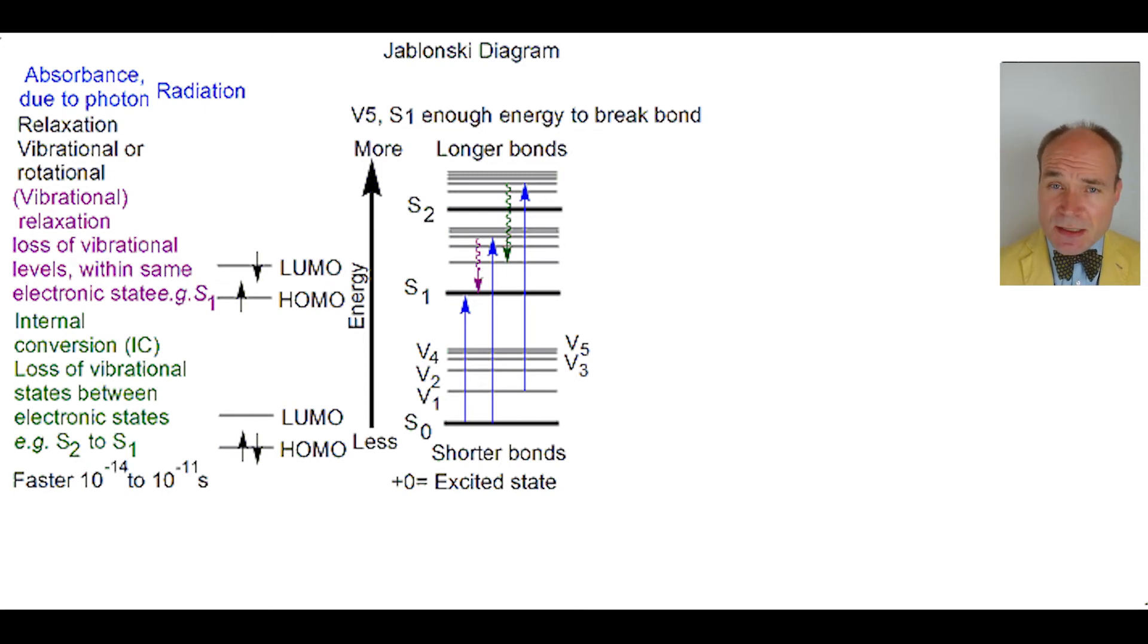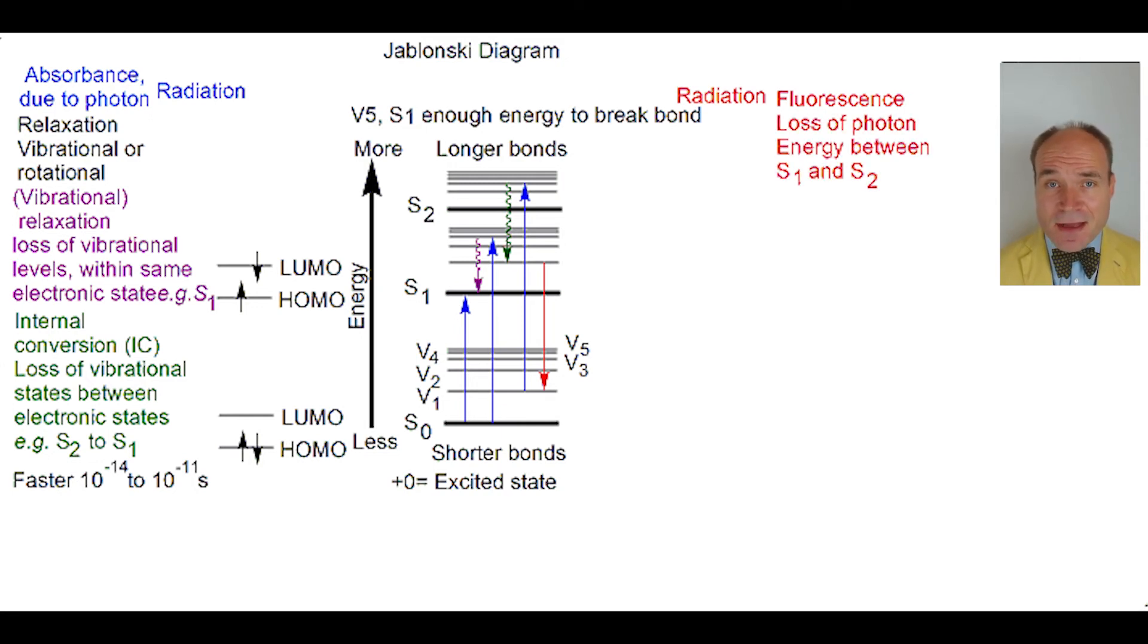Energy can also be lost through fluorescence. This produces radiation with the loss of a photon, and then the electron's energy drops between electronic states from S2 to S1.